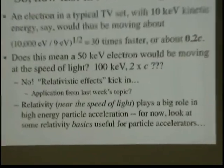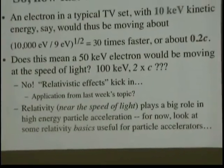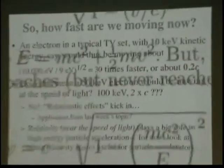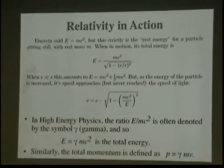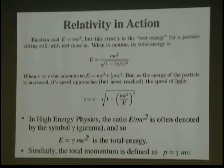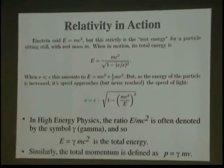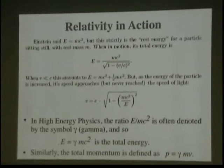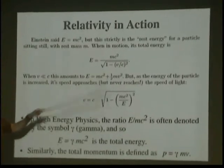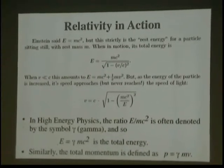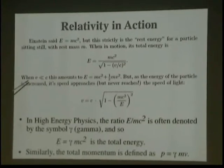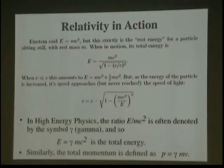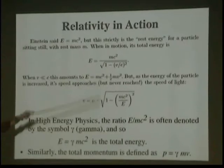Relativity, near the speed of light, plays a big role in high energy particle acceleration. And for now, we're going to look at some basics. Hopefully, this is a review from what you heard about next week, specifically for particle accelerators. So, old Albert said E equals MC squared. That applies only to the rest energy of a particle sitting still. When it's in motion, its total energy is given by this relation. So, you see E equals still MC squared, but now there's a factor in the denominator, which is dependent on the particle's velocity compared to the speed of light.